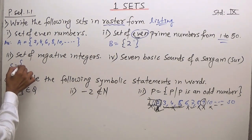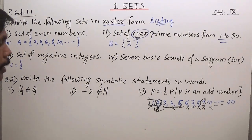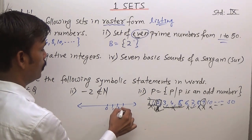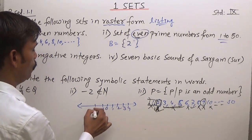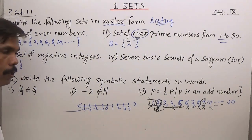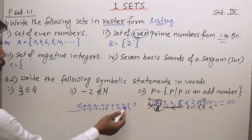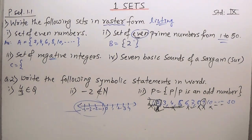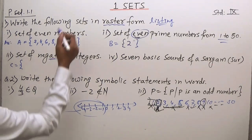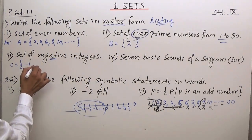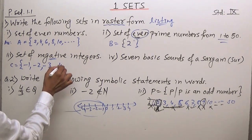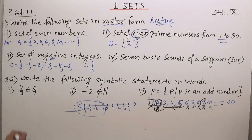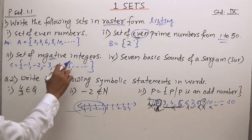This is set C: set of negative integers. You have to study the number line. Here is 0; the positive numbers are on this side, and the negative numbers are on the other side and so on. We will collect negative integers: -1, -2, -3, -4, -5, and so on. This is the set of negative integers.